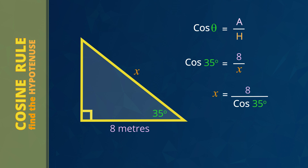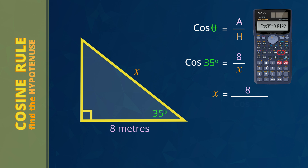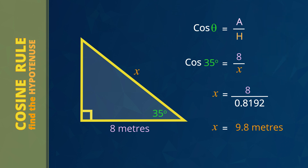So X equals 8 divided by cos 35. Cos is a mathematical operation on an angle. Using the calculator, cos 35 is 0.8192. 8 divided by 0.8192 gives the answer of X equals 9.8 meters. The length of the string up to the kite is 9.8 meters long.